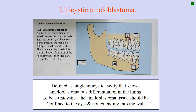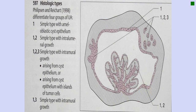The last type is unicystic ameloblastoma — a very distinct type because it is defined as a single unicystic cavity that shows ameloblastomatous differentiation in the lining. The ameloblastoma tissue should be confined to the cyst and not extend into the wall. The most common site is the mandibular premolar region. The patient may or may not present with a swelling.